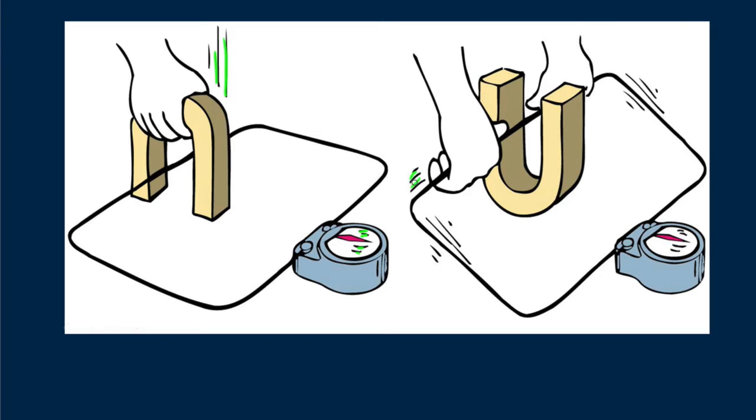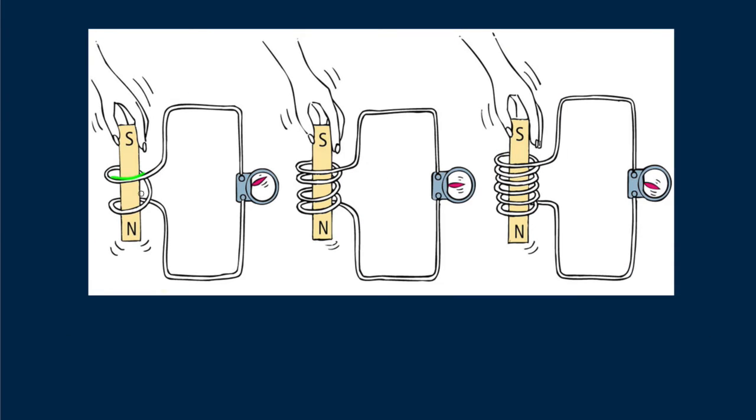Voltage could be induced by motion of a magnet or motion of the wire relative to the magnet. Only relative motion between magnet and wire was needed. How much induced voltage depended also on the number of coils of wire involved. More coils, more voltage.